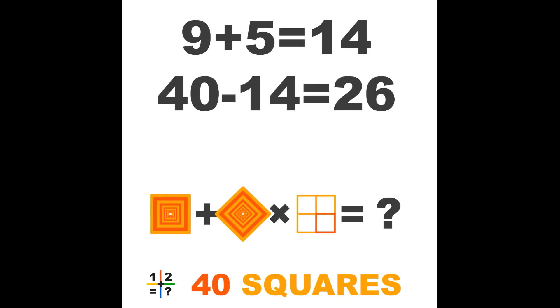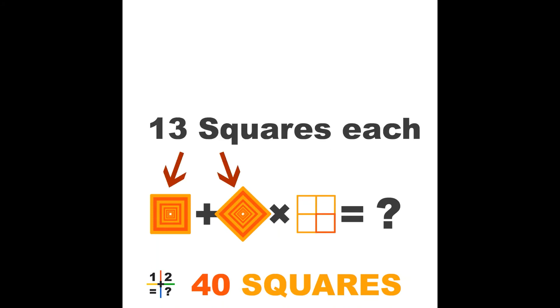26 squares left in the first two objects of the last line. The squares are equal in size and number of squares, so we can calculate by logic how many each object has. And that is 13.